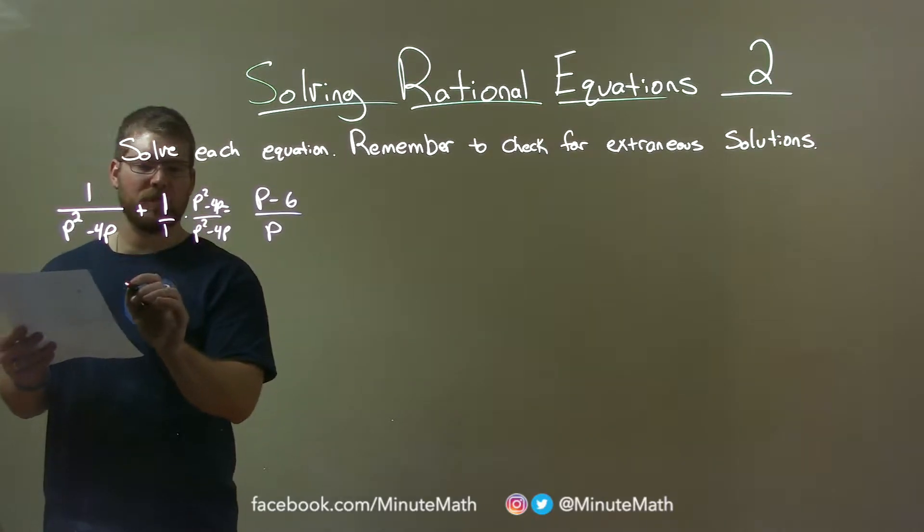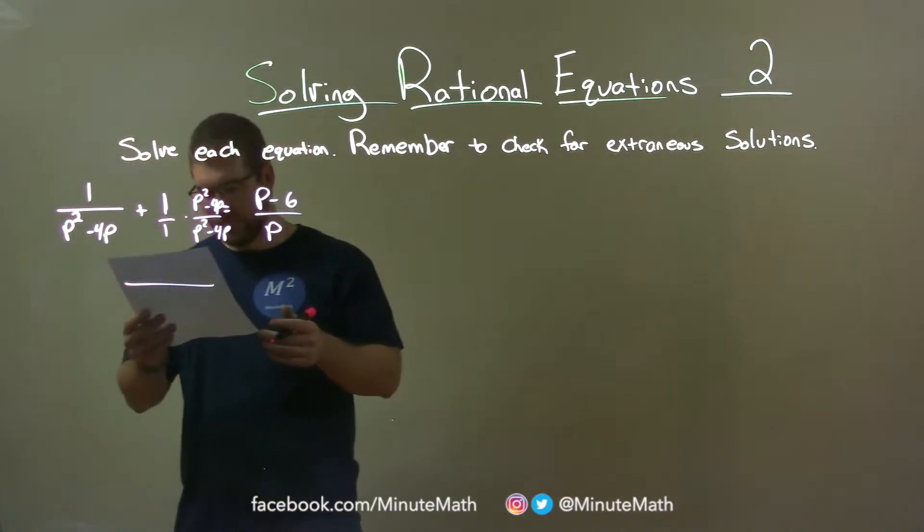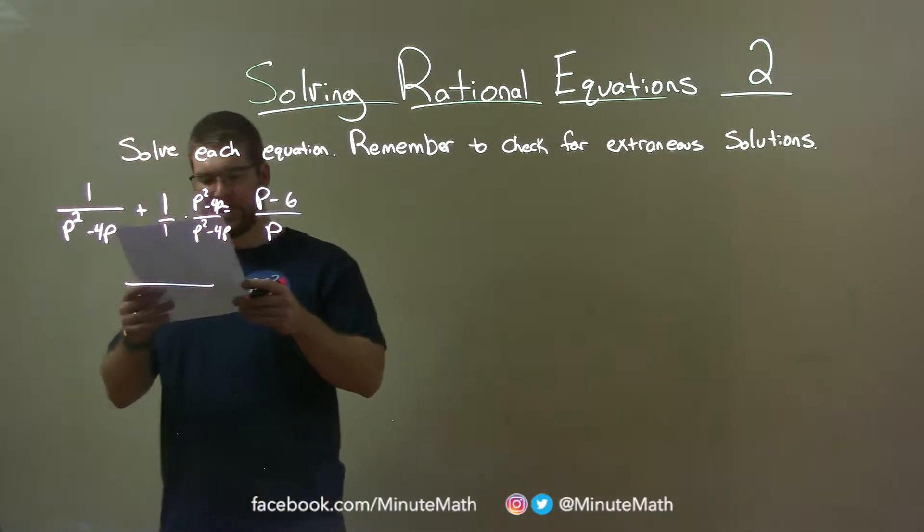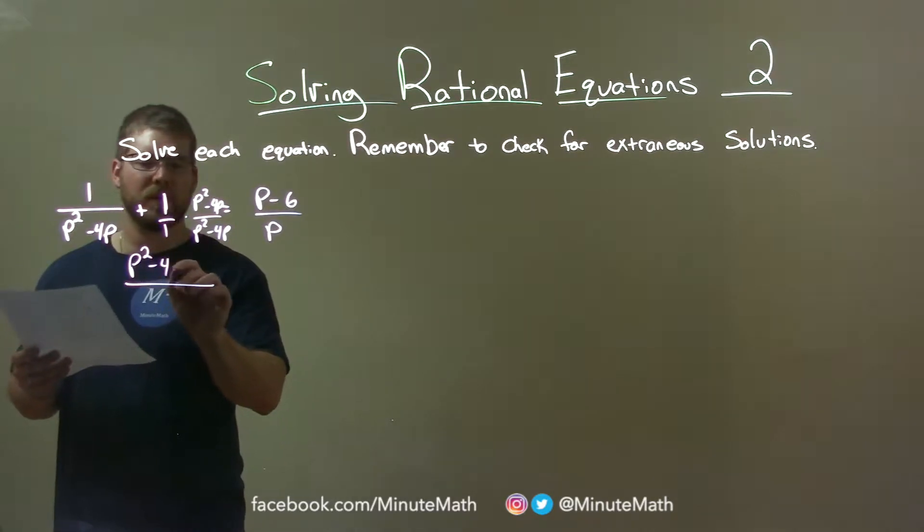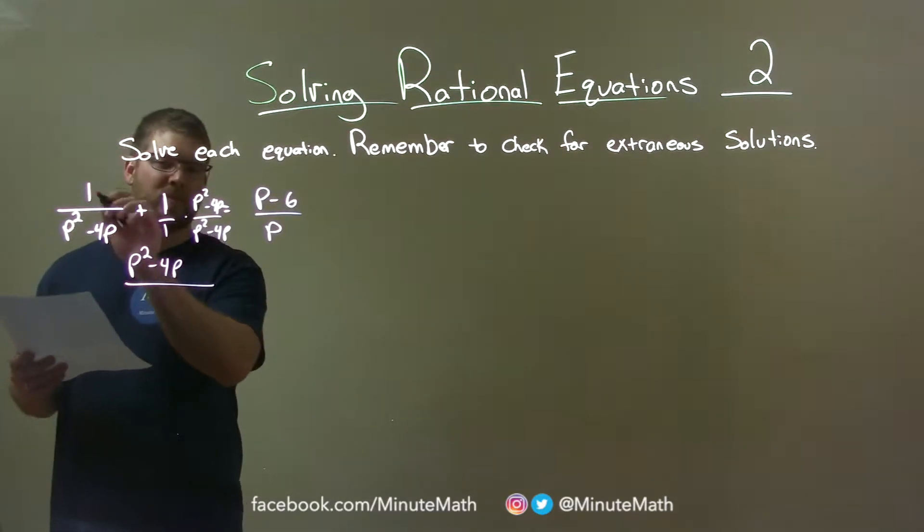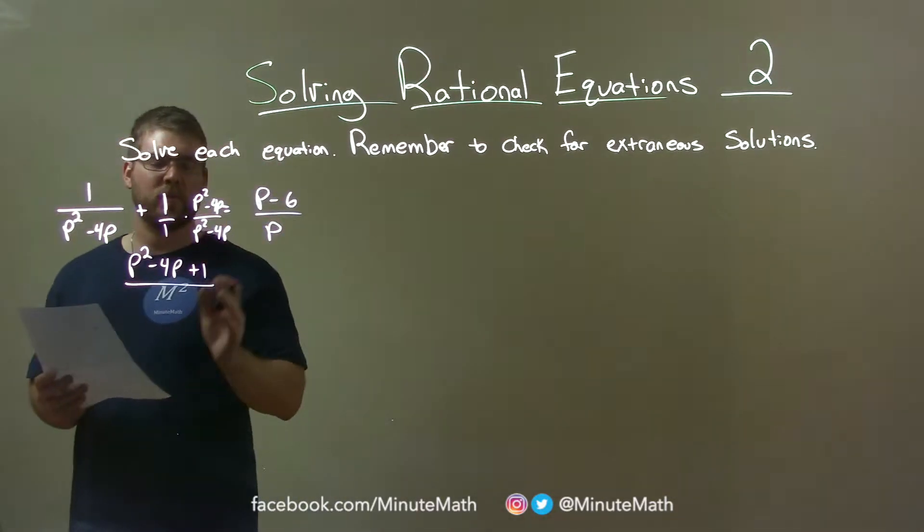And what this does, it allows me to combine the two to one big fraction here. So let's look at the numerator. Well, p squared minus 4p times 1 is p squared minus 4p. We're going to do p squared minus 4p. And then we can't forget that there's a 1 up there actually. That's right here.